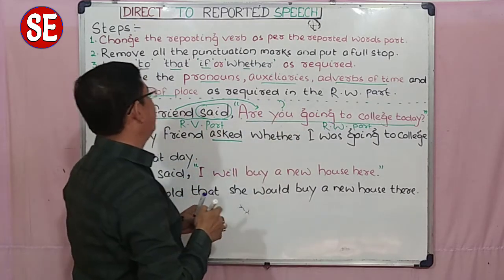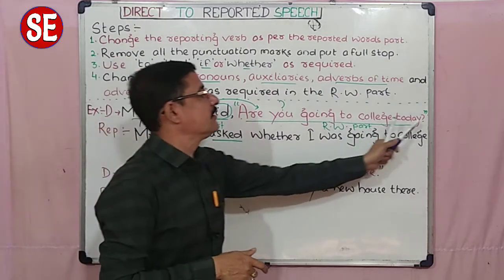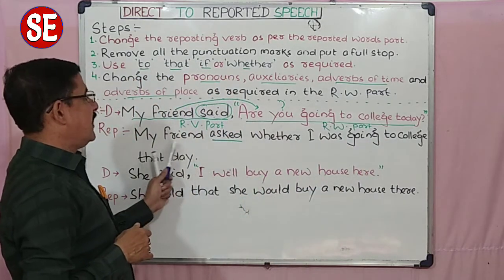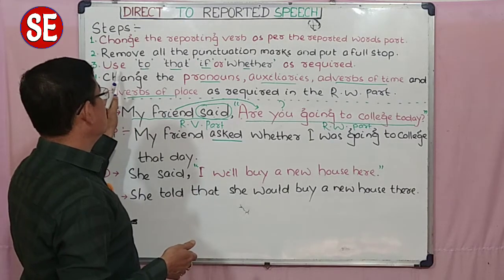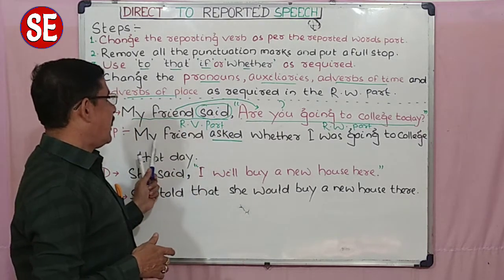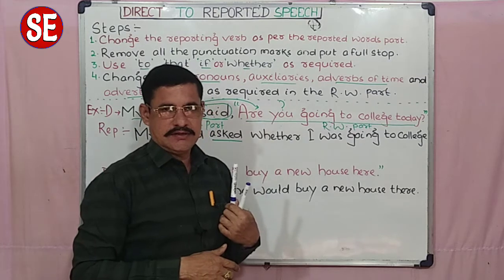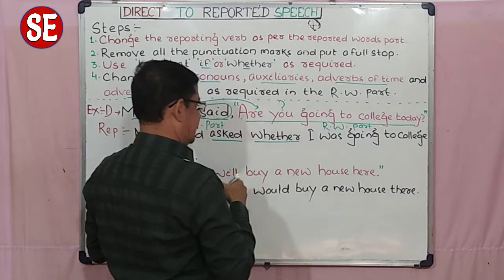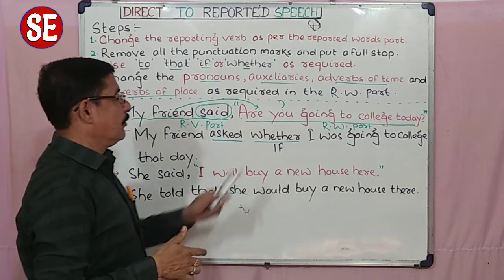Step two: remove all punctuation marks. There is a comma, inverted commas, and a question mark — but in the indirect sentence you will see none of them, only a full stop at the end. My friend asked — and after that, nothing extra. Punctuation marks removed. Third step: use 'to/that/if/whether' — which one is suitable? My friend asked whether — 'whether' is more suitable here. You can use 'if' as well, but 'whether' is more appropriate.